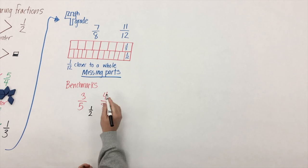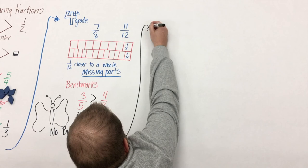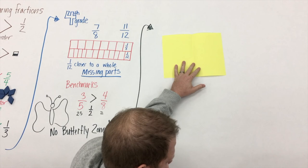The last strategy we can use to compare fractions is with a benchmark. Here we'll use a benchmark of a half. We know that four-eighths is equal to a half, and half of five is two and a half. We're not using any butterflies here - butterflies have no place with comparing fractions.